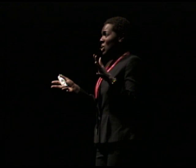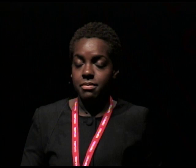Number two, speech-language pathologists often use norm-referenced standardized tests. It's very common for these professionals to use these tests, but what they don't realize is that a few of them are culturally biased — the responses are analyzed inappropriately because they are not differentiating between a disorder and a dialect. And the last reason is that SLPs don't realize that speakers, particularly children, who use African American English as their first dialect are essentially learning standard American English as a second dialect, similarly to someone who is bilingual.